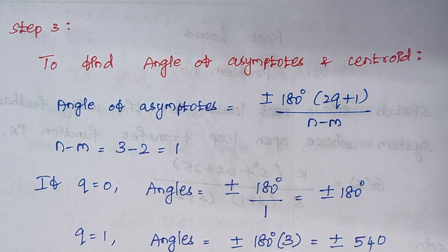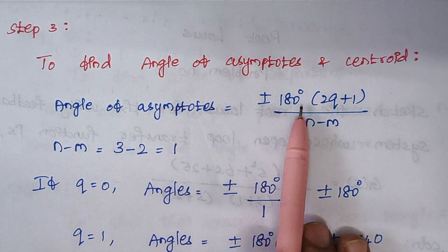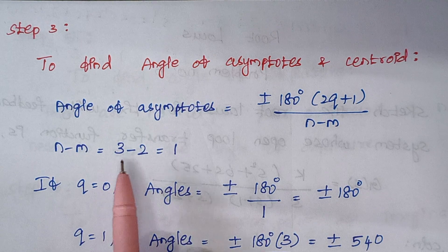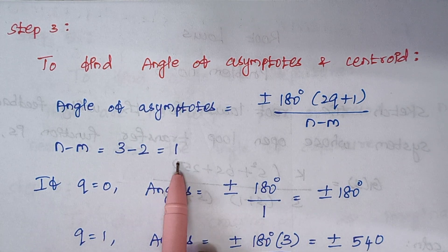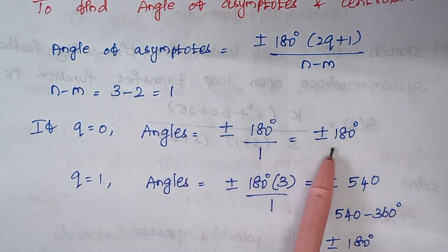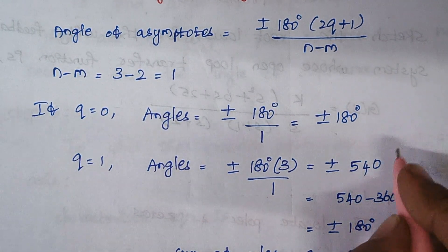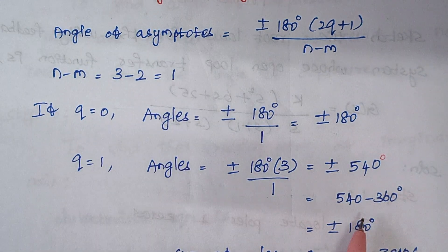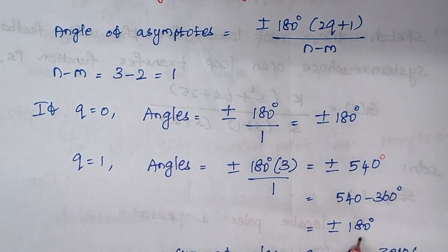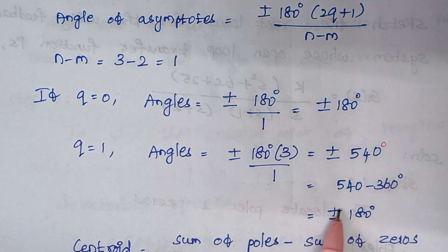Step 3 is to find the angle of asymptotes and the centroid. The angle of asymptotes formula is plus or minus 180 degrees times (2q plus 1) divided by (n minus m). Here n is 3 and m is 2, so n minus m is 1. Substituting q equals 0 gives 180 degrees. Substituting q equals 1 gives 540 degrees, which converts to 540 minus 360, again giving plus or minus 180 degrees — so the angles repeat.